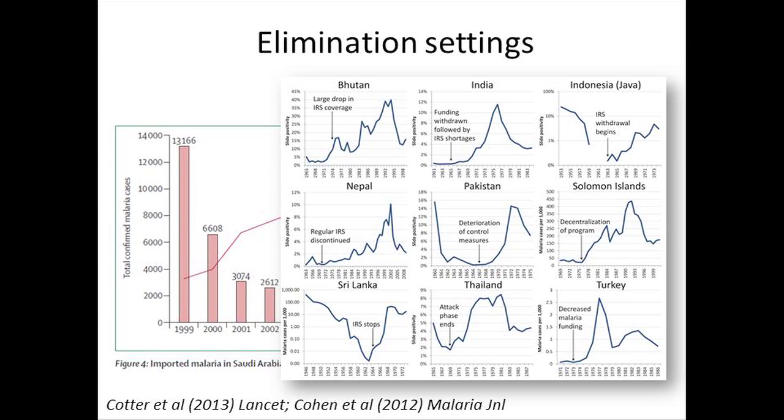A similar example from the Ugandan highlands by Caroline Lynch looked at how much travel contributes to transmission in highland and highland fringe areas. In a case-control study, patients who traveled to areas of high transmission were seven times more likely to have confirmed malaria, and it's feasible that this introduction of parasites is sustaining transmission in some of these highland areas. In elimination settings, as local cases drop, the percentage of imported cases increases.